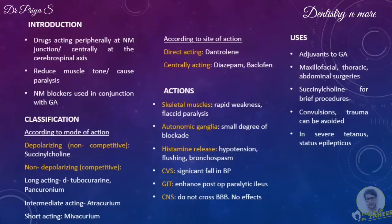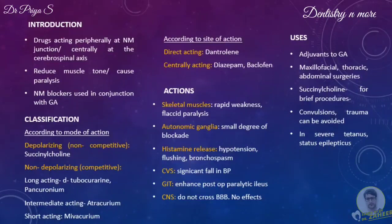The most important use of neuromuscular blockers is as an adjunct to general anesthesia. Adequate muscle relaxation can be achieved at lighter planes, and they are especially valuable in abdominal and thoracic surgery. In dentistry, they may be required for reducing mandibular or maxillofacial fractures. Succinylcholine is employed for brief procedures such as endotracheal intubation, laryngoscopy, or reduction of fractures. Convulsions from electroconvulsive therapy can be avoided by use of relaxants, and severe cases of tetanus and status epilepticus may be managed with neuromuscular blockers.